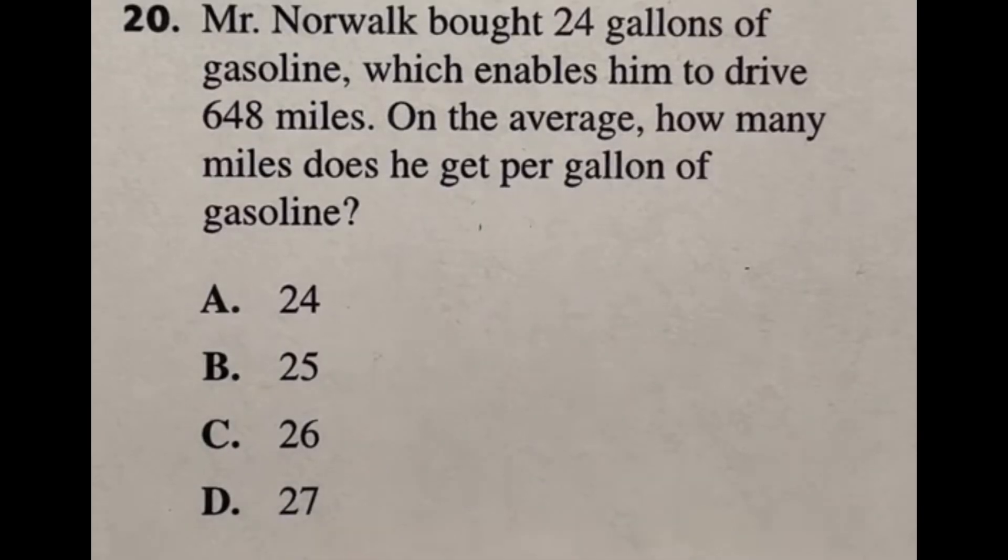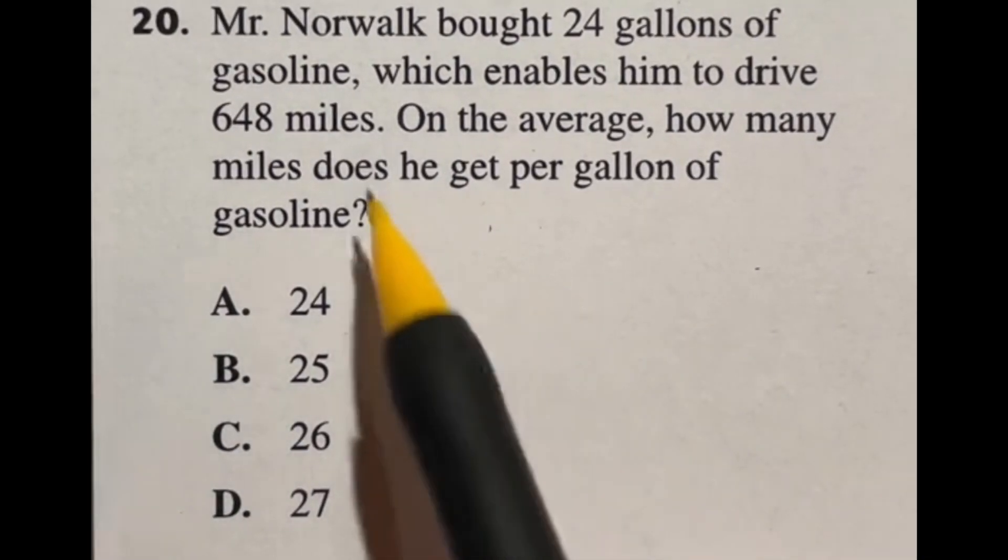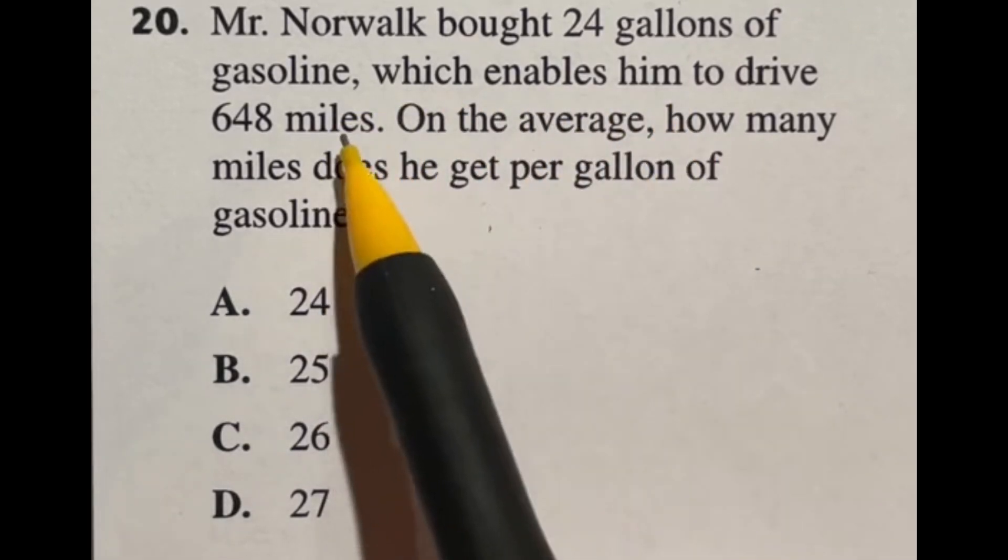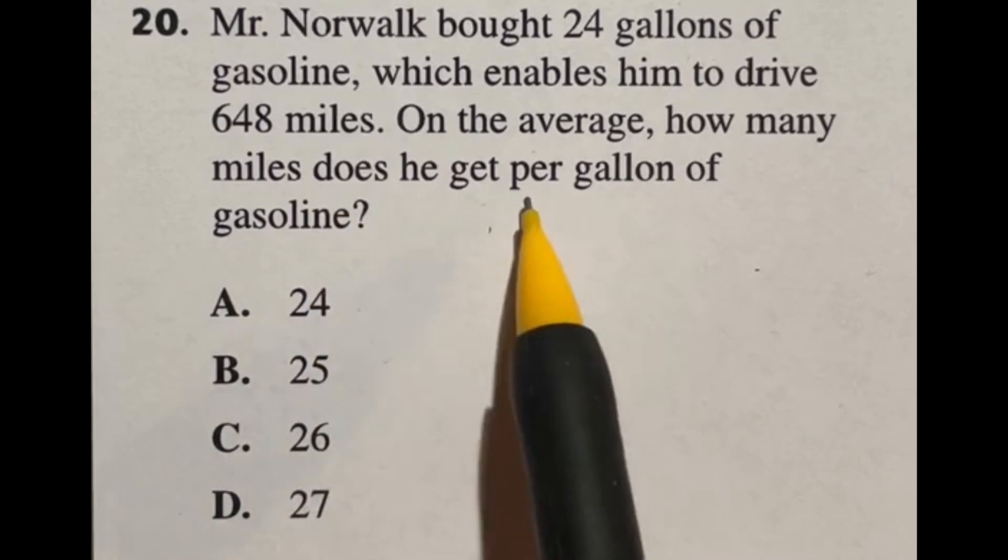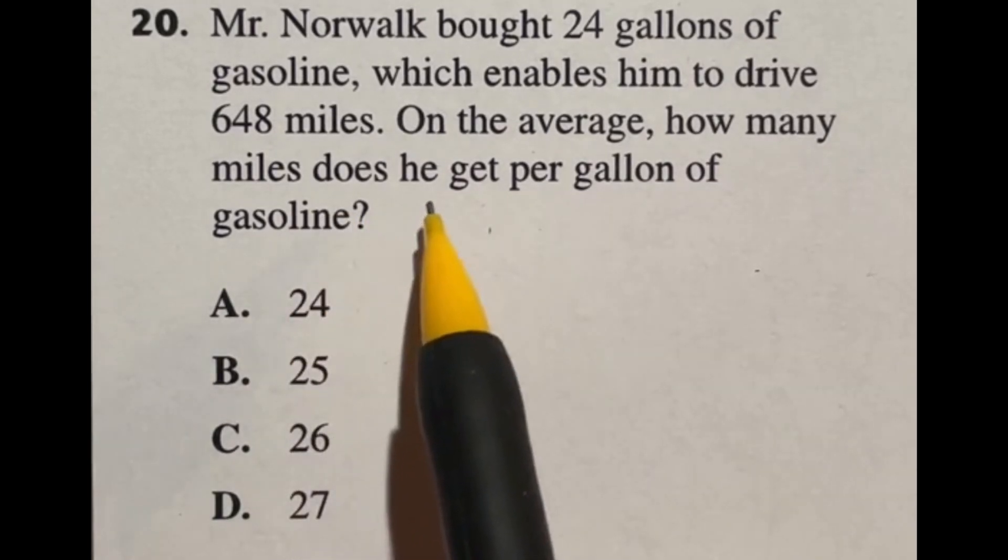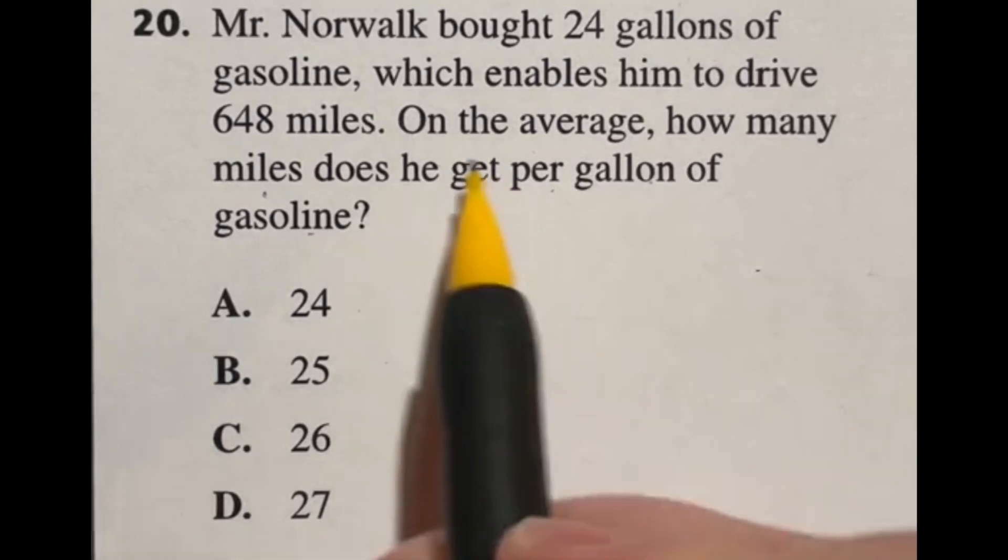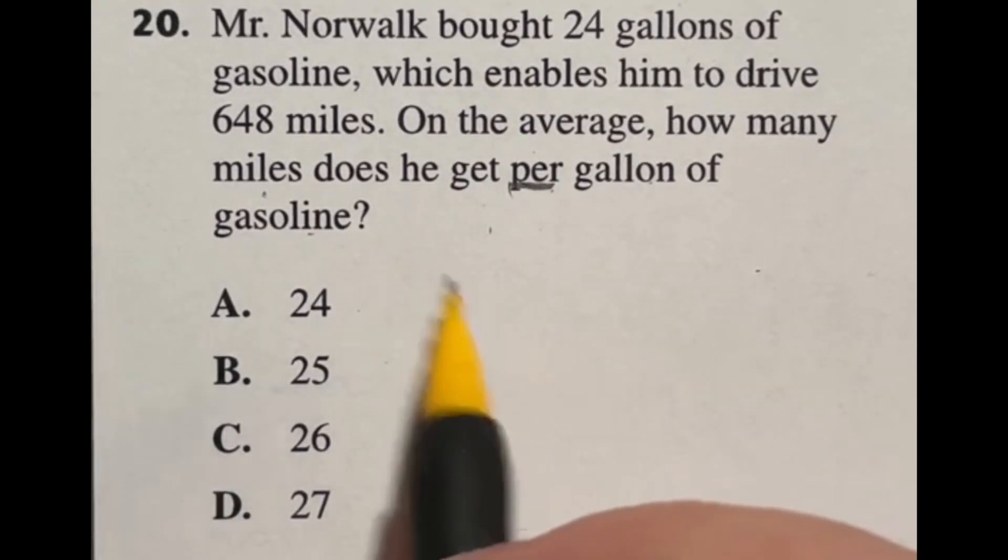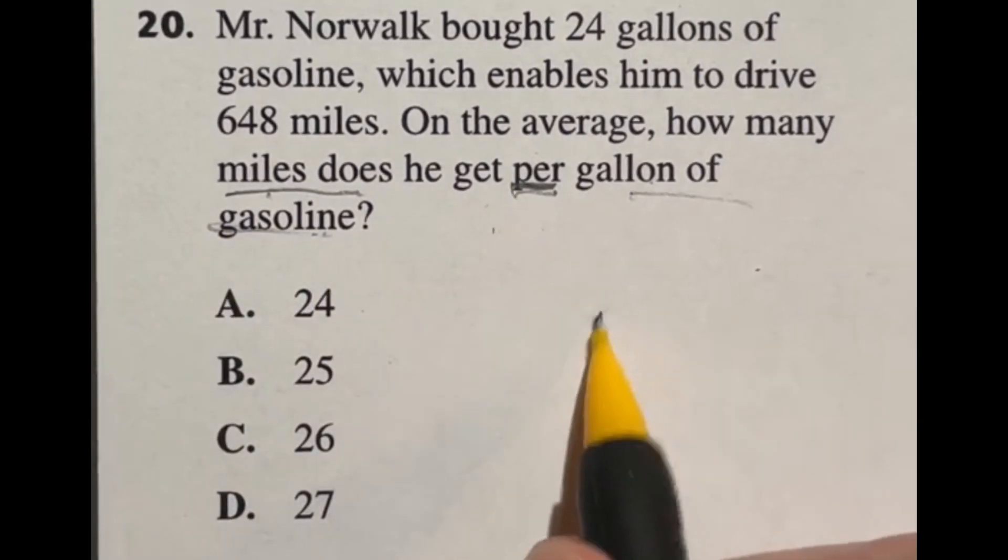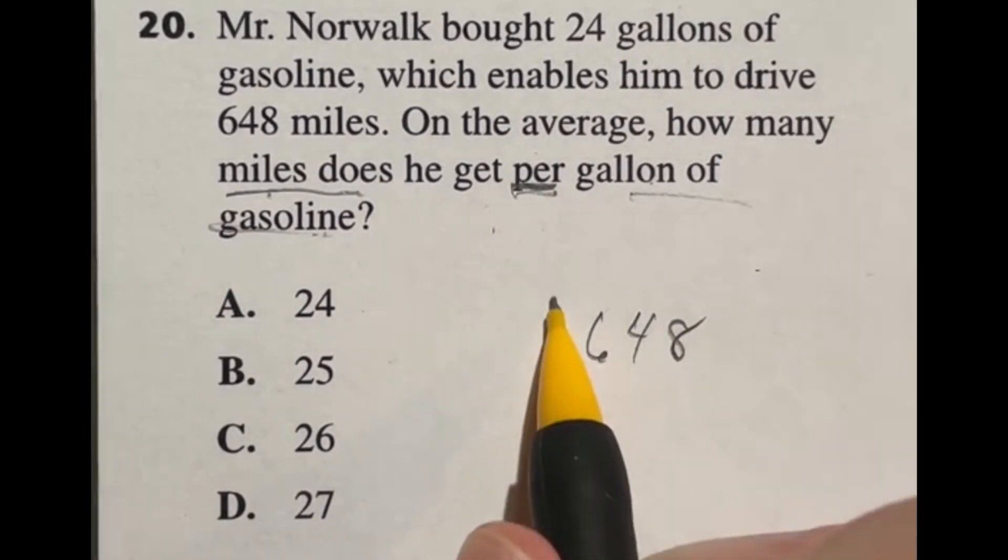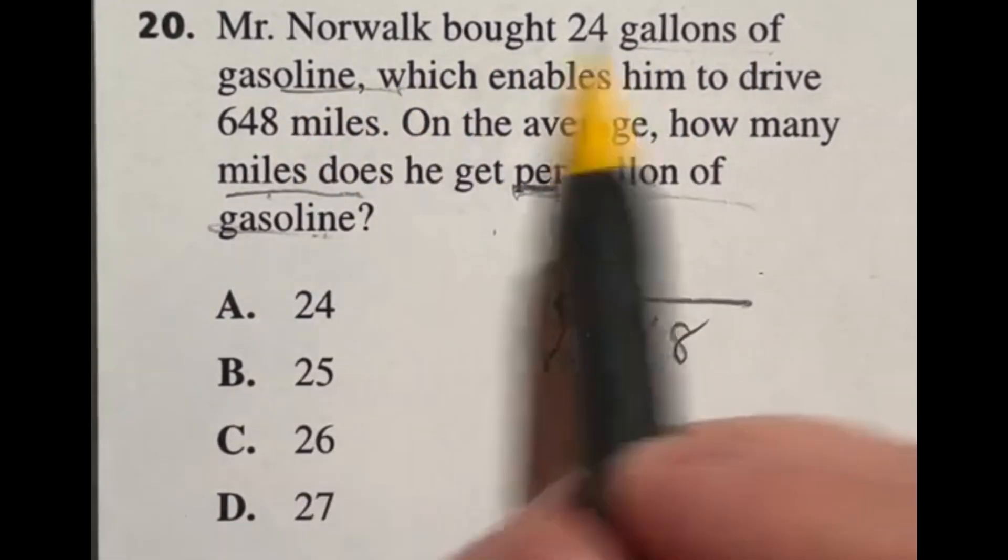So again it seems like this ASVAB test is really testing just your ability to do math without a calculator even if it's super basic. So here it says Mr. Norwalk bought 24 gallons of gasoline which enables him to drive for 648 miles. On the average how many miles does he get per gallon of gasoline? So in this case if we're doing miles per gallon of gasoline, then we're using division because we always say per here means that we're dividing. So in this case we're doing miles divided by gallons of gasoline. So in this case there were 648 miles and we are dividing that by our gallons of gasoline which is 24.